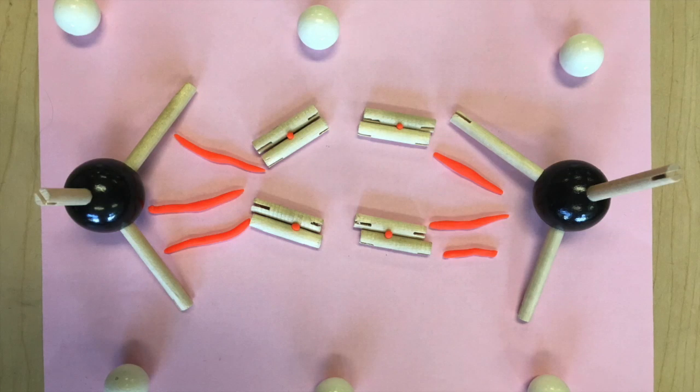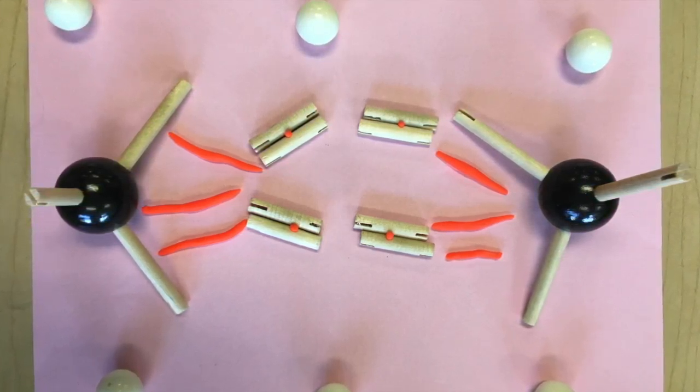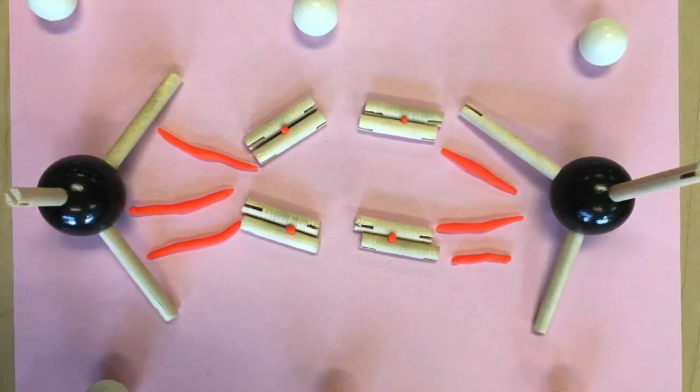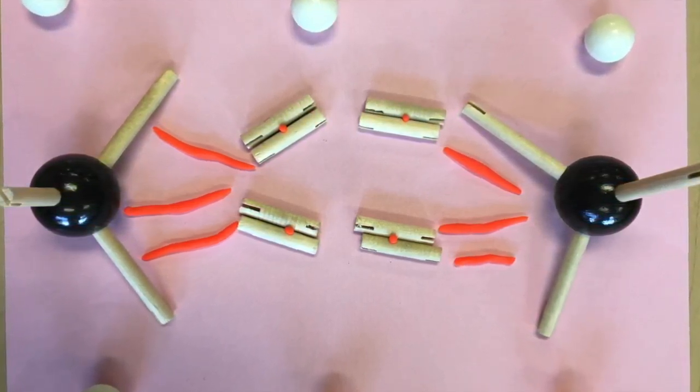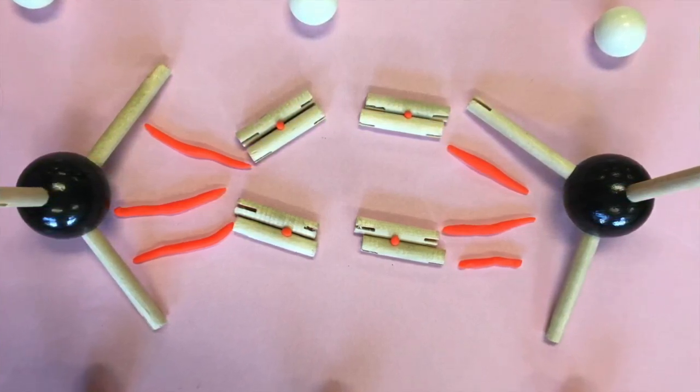The spindle fibers attach to the chromosomes and the chromosomes align on the metaphase plate. If the chromosomes do not line up correctly during metaphase, they will not be duplicated correctly and will not divide evenly into the two daughter cells. One will either have too many or too little chromosomes.